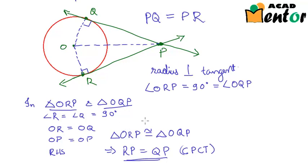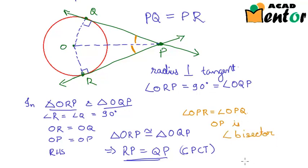Now if we look carefully, there are other angles which are equal as well because of CPCT. Angle OPR equals angle OPQ, which means OP is the angle bisector of angle QPR. So the line joining the center to an external point bisects the angle formed by the two tangents. This is an important property and comes in very handy in some cases.